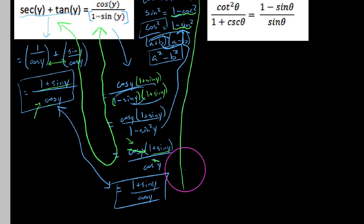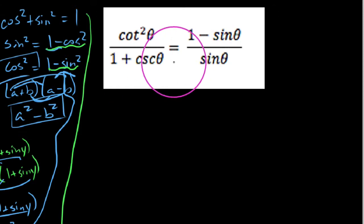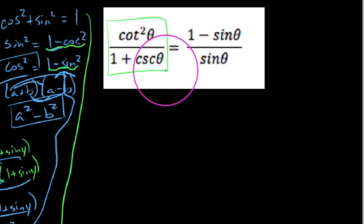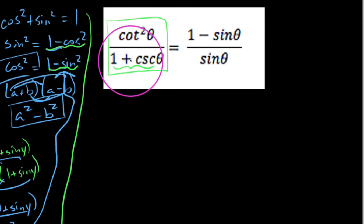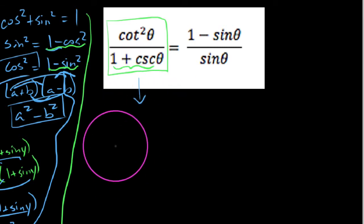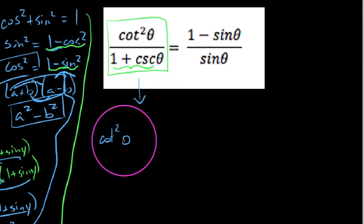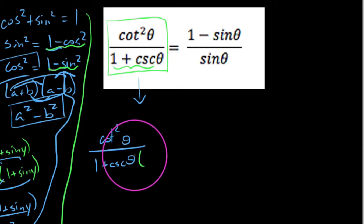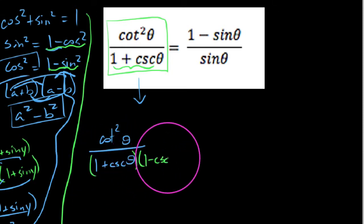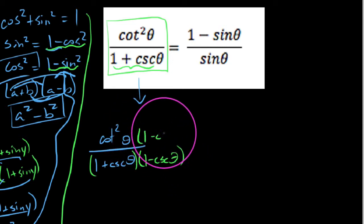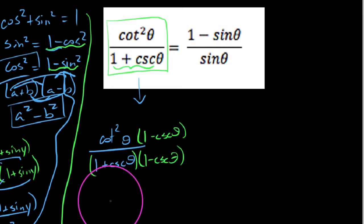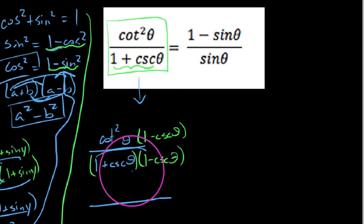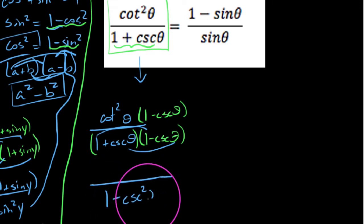Now let's look at the second example on the right. I'm inclined to work with the left-hand side, and I notice a denominator of 1 plus cosecant — not 1 plus cosecant squared, just 1 plus cosecant. So maybe we'll go ahead and take the top and the bottom times the conjugate of the denominator to get a difference of squares working, where we could apply a Pythagorean substitution. The conjugate of 1 plus cosecant θ is 1 minus cosecant θ, and the denominator multiplies out to 1 minus cosecant squared of theta.